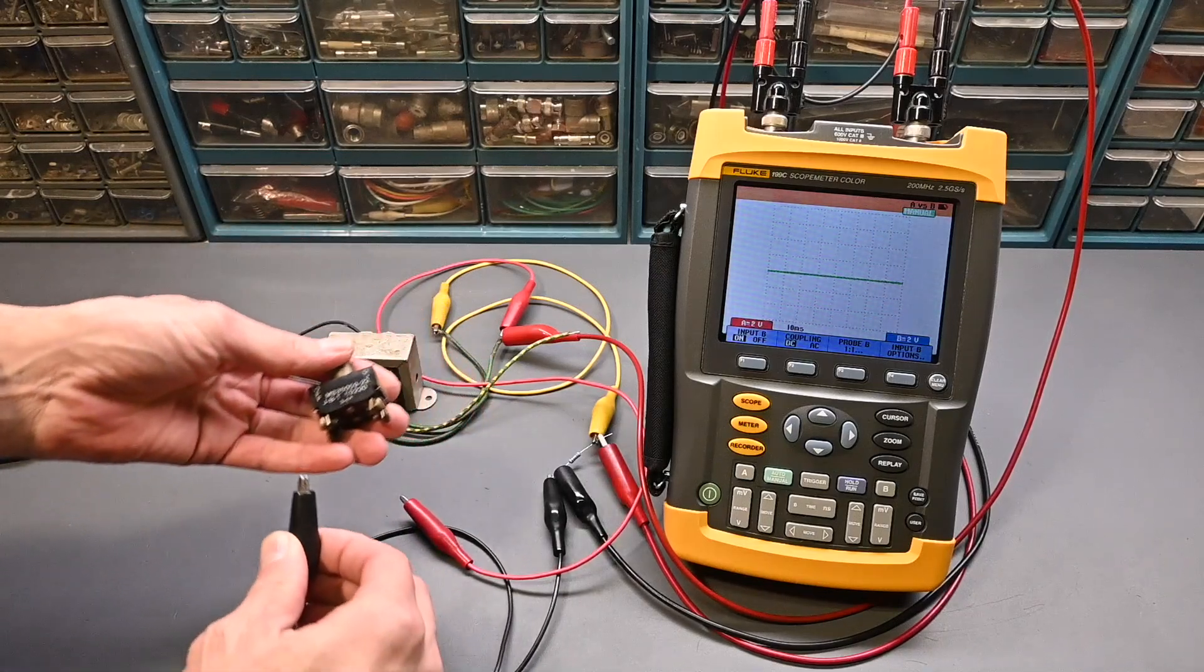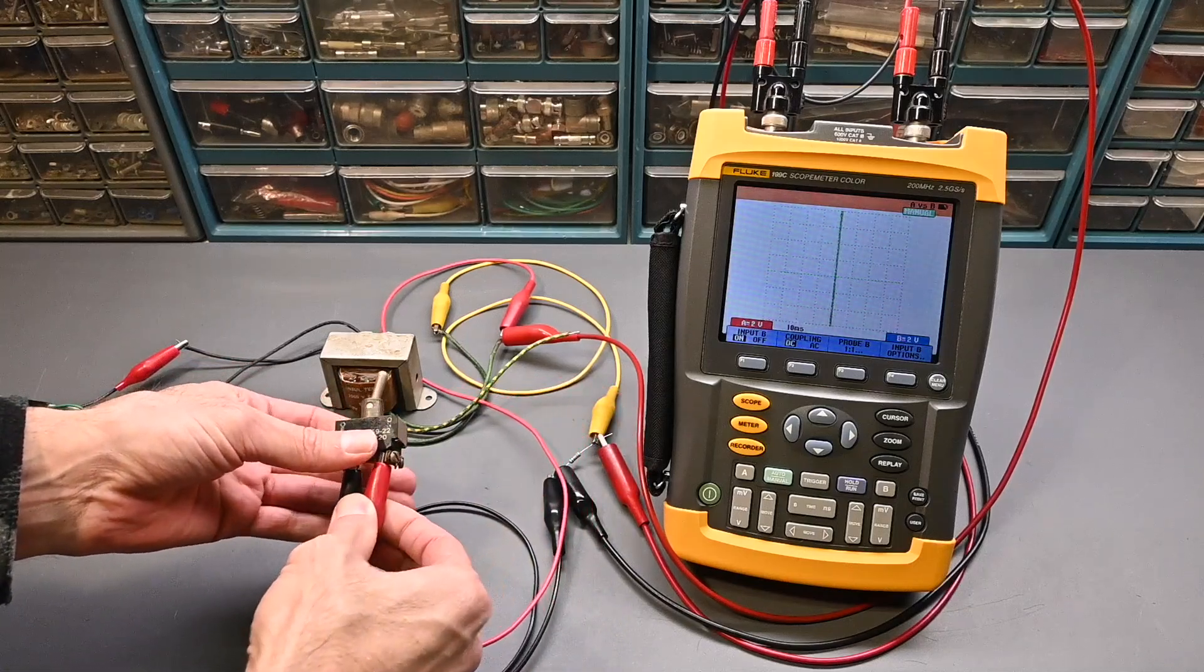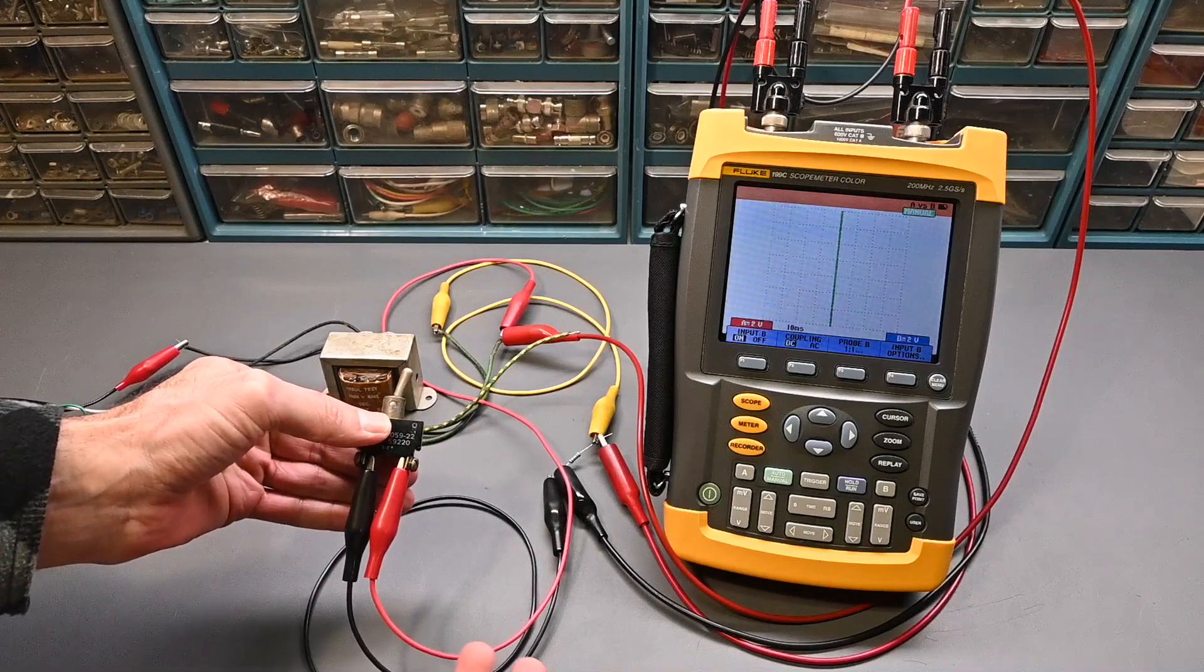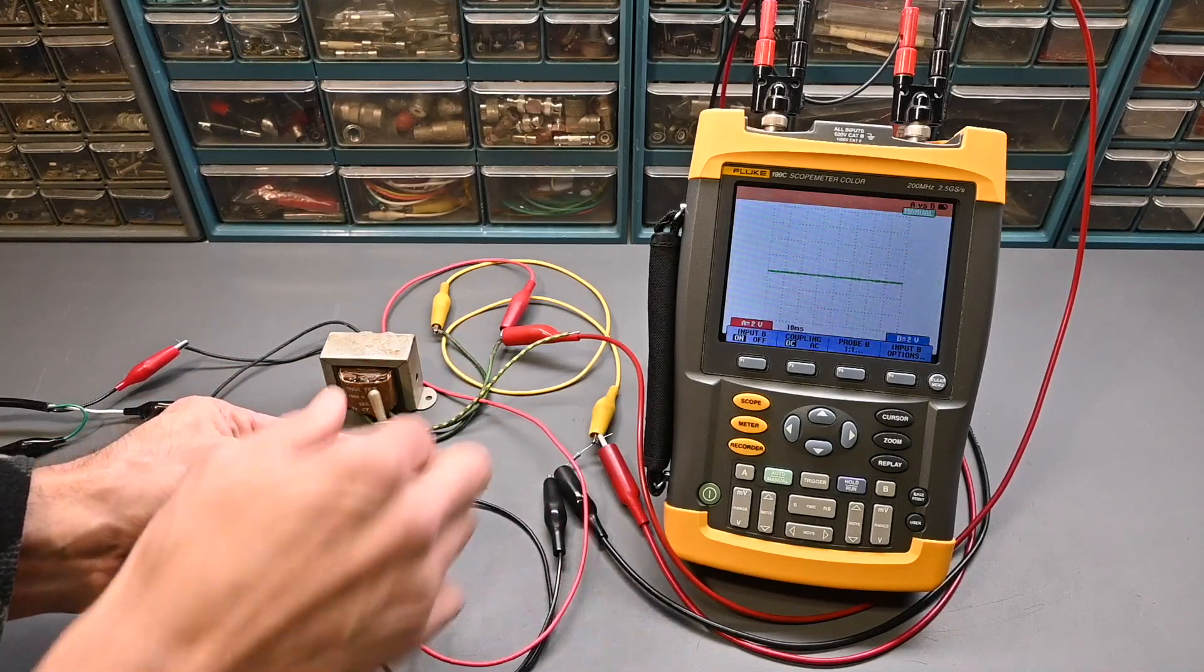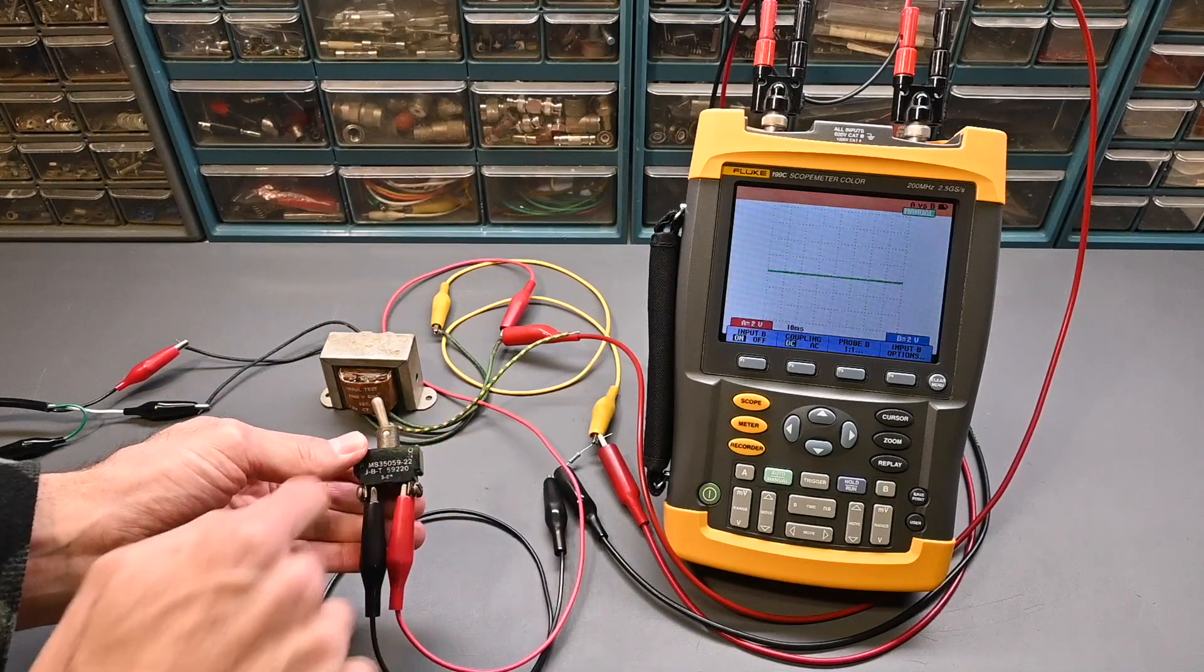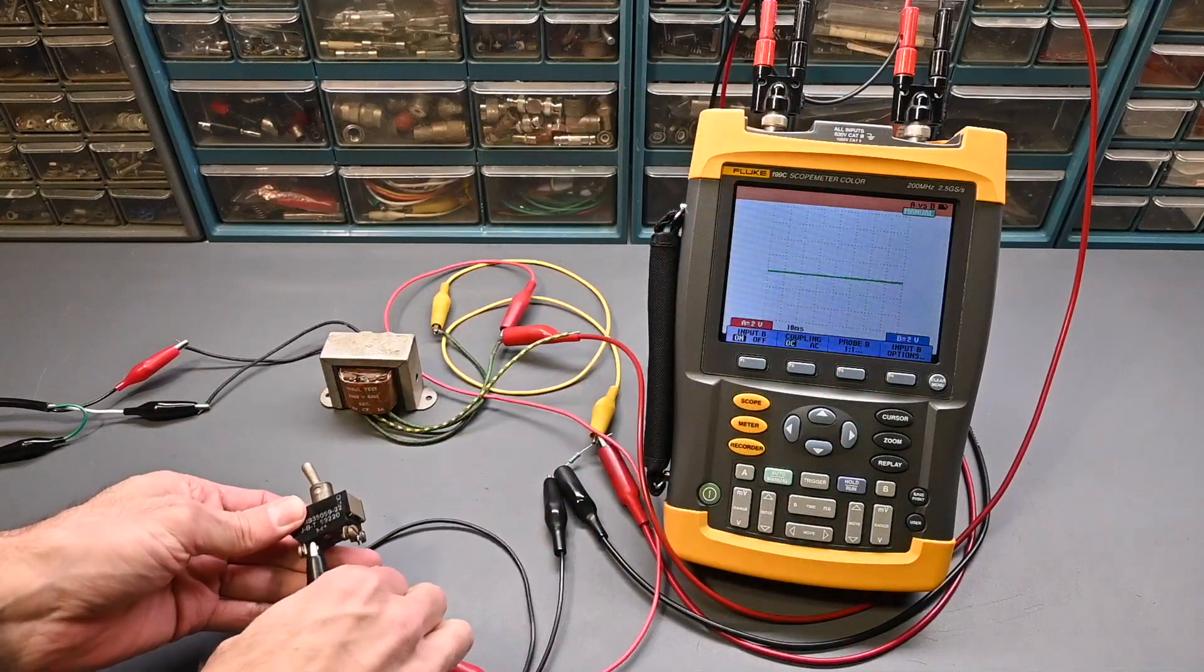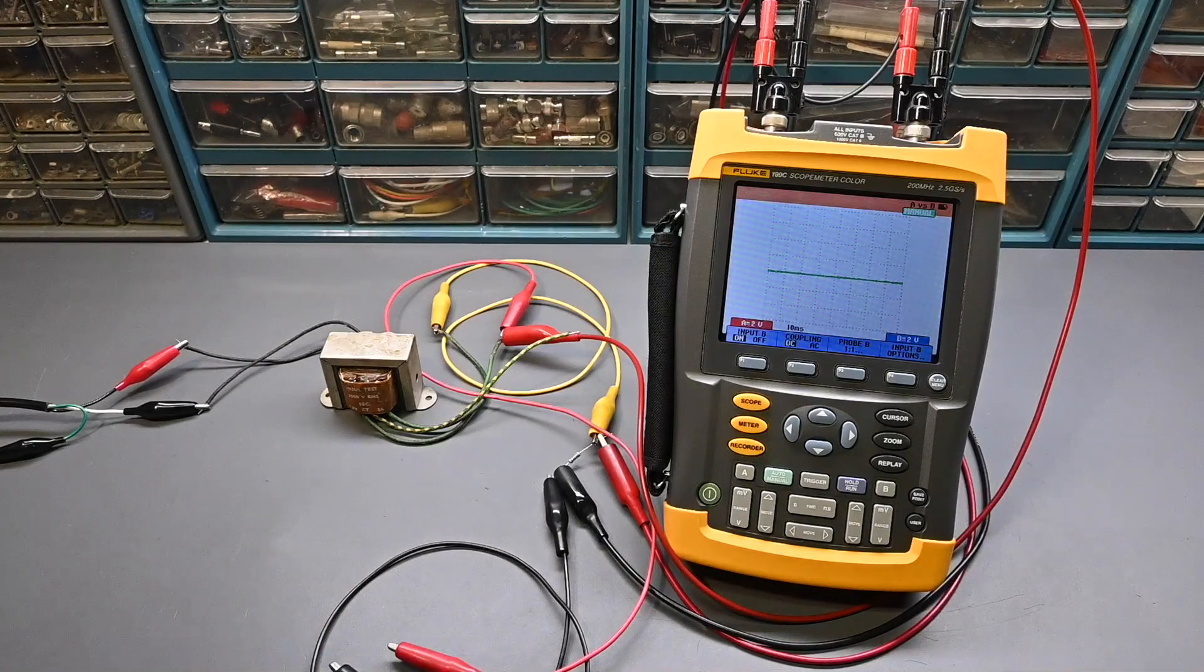With the idea of just using this as a continuity tester, if I have a toggle switch like this and you wanted to test that, you could just clip this in and then turn the switch on and off. Then you would be able to confirm that the switch, or maybe a set of relay contacts or something like that, they're switching and there is no problem. Because if there was a high resistance across those contacts, you would get that slanting line on here. That's one example of what you can use this for, for just a simple continuity test.